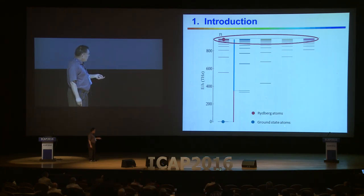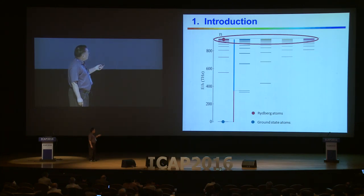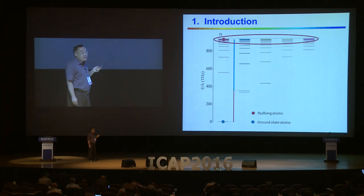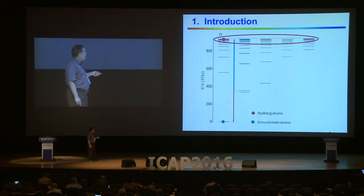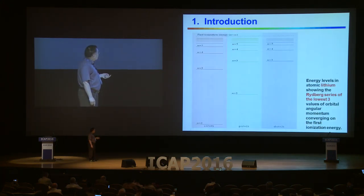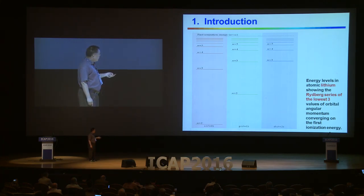What are the Rydberg atoms? Usually we can use the principal quantum number to describe the energy of atoms. The lowest is ground states. If the principal quantum number n is large, as 30, it's a high-excited state — it's atoms. It's Rydberg atoms.